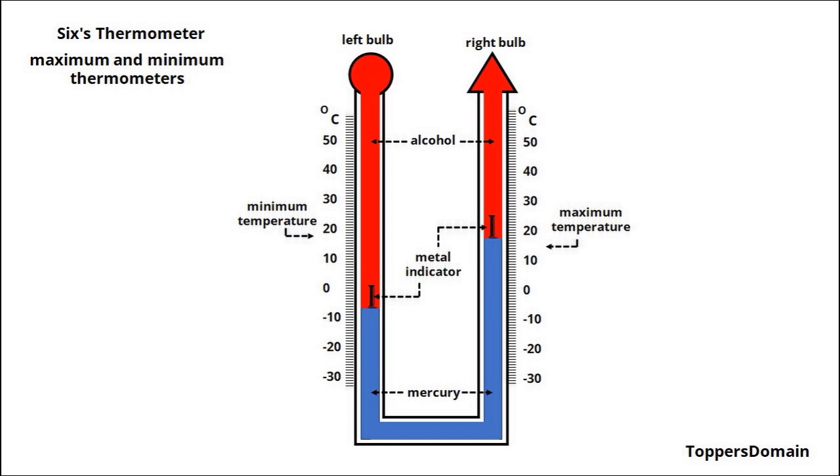When the temperature rises, the mercury or alcohol expands, causing the column to rise.